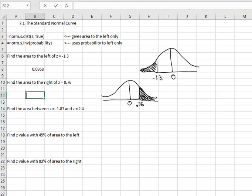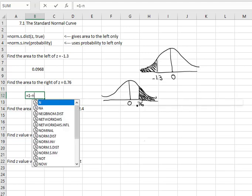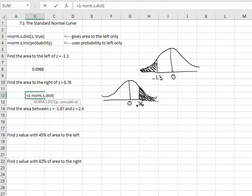So I'm going to type in equals 1 minus and subtract off the area to the left from 1.0. Now we have norm.s.dist, open a parentheses. The z value is 0.76 comma true. And now because I did 1 minus, it's going to give me the area to the right, which is 0.2236. It's always good to take a quick look to see if it makes sense. 0.22 is less than half and I've shaded less than half of this normal distribution. So I think that sounds like a reasonable solution.